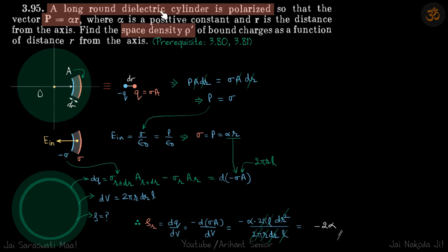We are given a round dielectric cylinder which is polarized in the form P = αr. So polarization is proportional to distance from the center and its direction is always radial, radially outward.